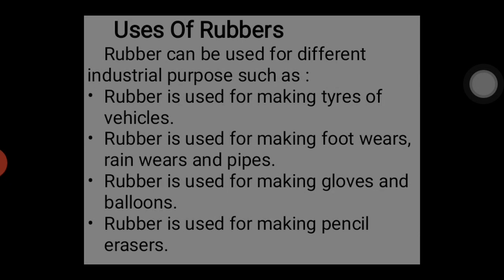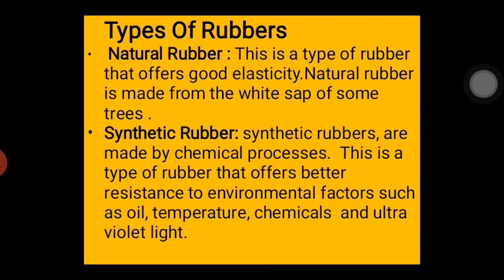Now let's look at the types of rubber. We have two types: natural rubber and synthetic rubber. Natural rubber is a type of rubber that offers good elasticity and is made directly from the latex that you get from trees.